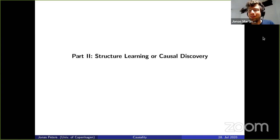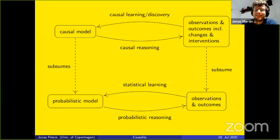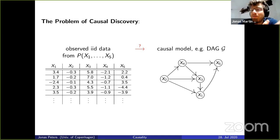I'm going to talk about a couple of concrete ideas. First, defining the problem: we have some observed dataset — similar as before — but now we don't have the graph. We are interested in finding the graph. Think about an IID dataset over variables, and we are interested in inferring something about the causal model, for example the graph. DAG stands for directed acyclic graph.